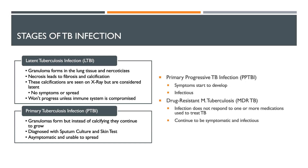Once we get to the primary progressive TB infection, or PPTBI, symptoms start to develop and the patient does become infectious. The last stage would be drug-resistant M. tuberculosis, or MDR-TB. This is when the infection does not respond to one or more medications used to treat TB, so it continues to spread and become more symptomatic and infectious.